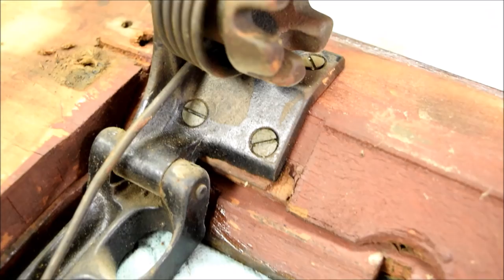Next off is the spring assembly. This is what lowers the machine down and raises it up, or helps you raise it up. Four screws is all. It's coming off now.